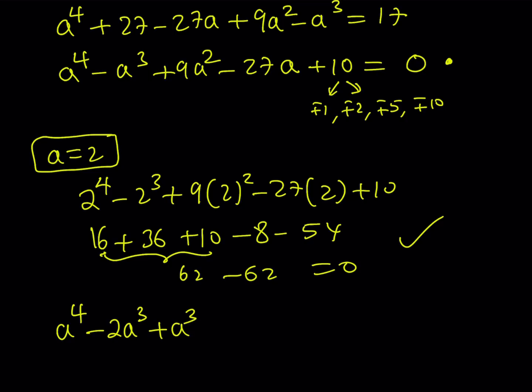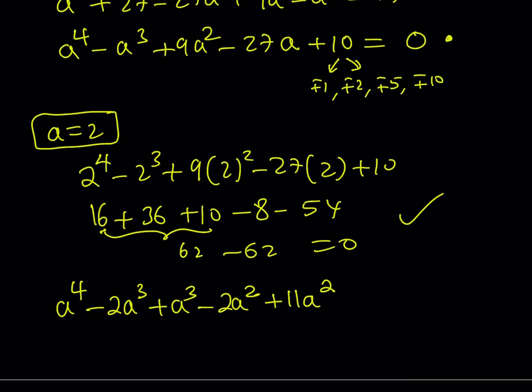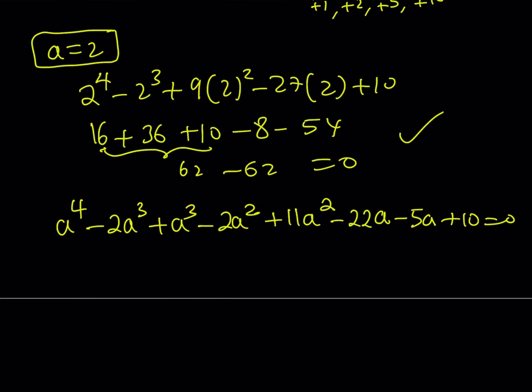Then I do have a positive a cubed left over. But this requires that I subtract 2a squared. But then I have to add 11a squared to make 9a squared. And then I'm supposed to subtract 22a. And then to get 27a, I need to do minus 5a. And then I end up with 10. And notice that negative 5a plus 10 is also divisible by a minus 2 because it has to be that way.